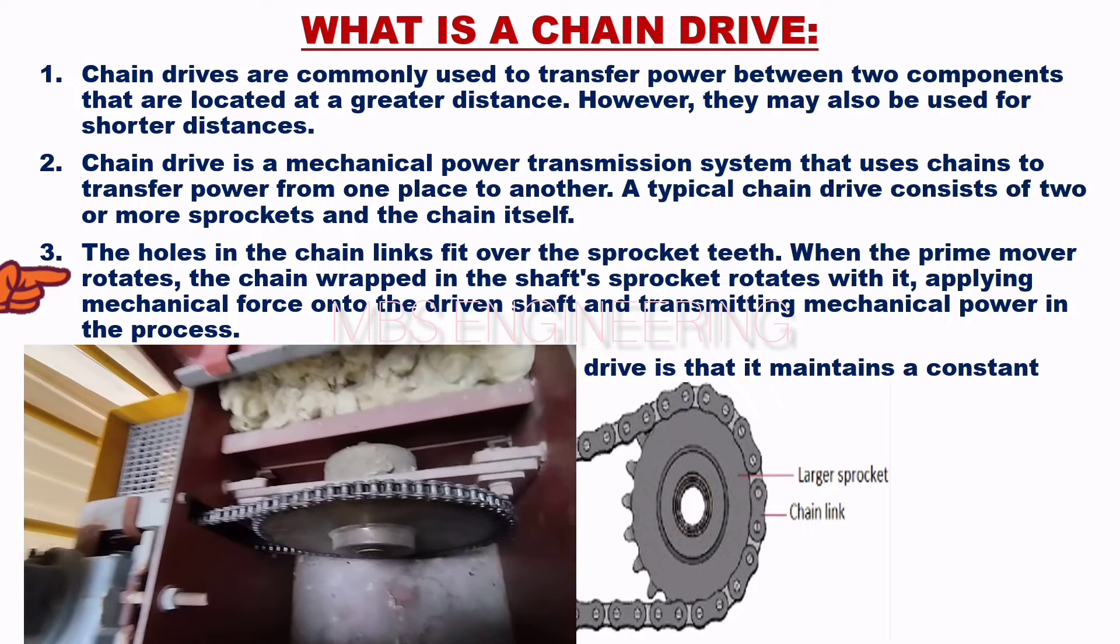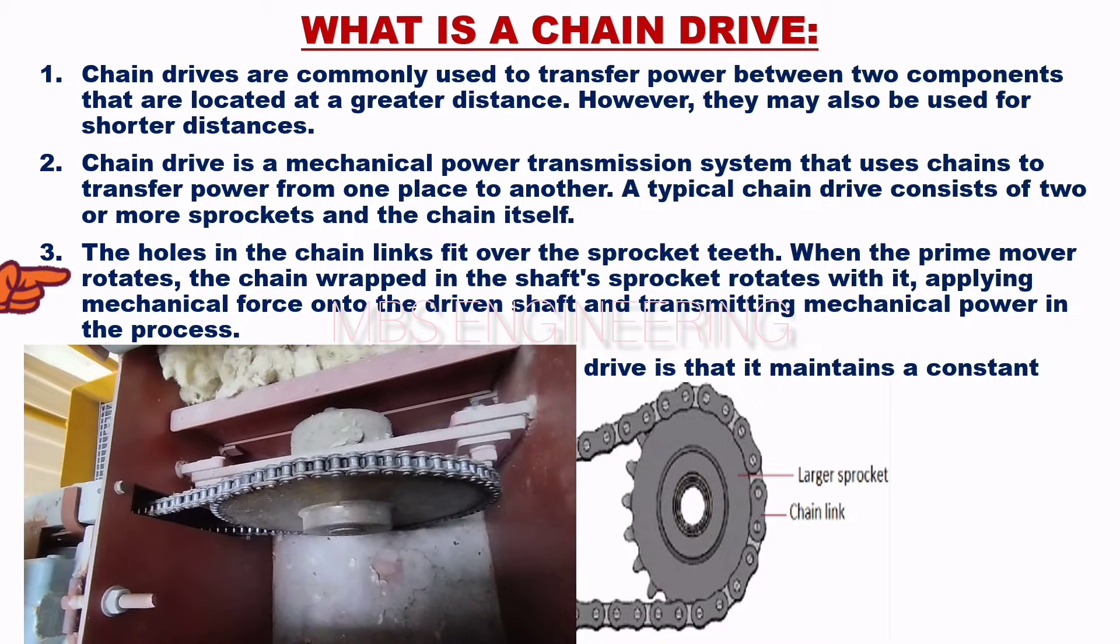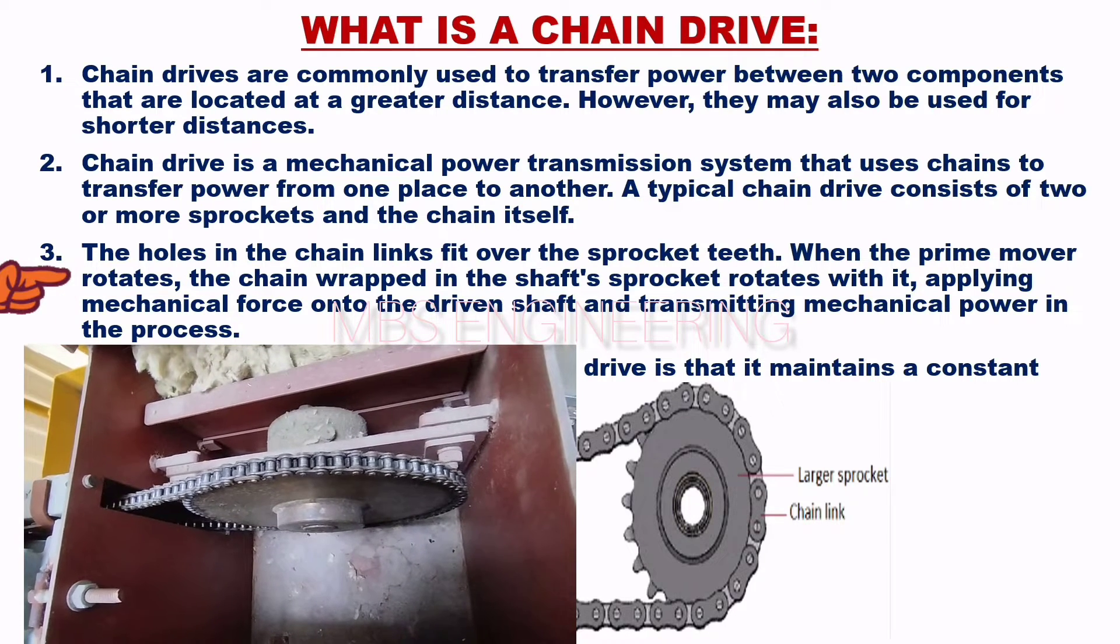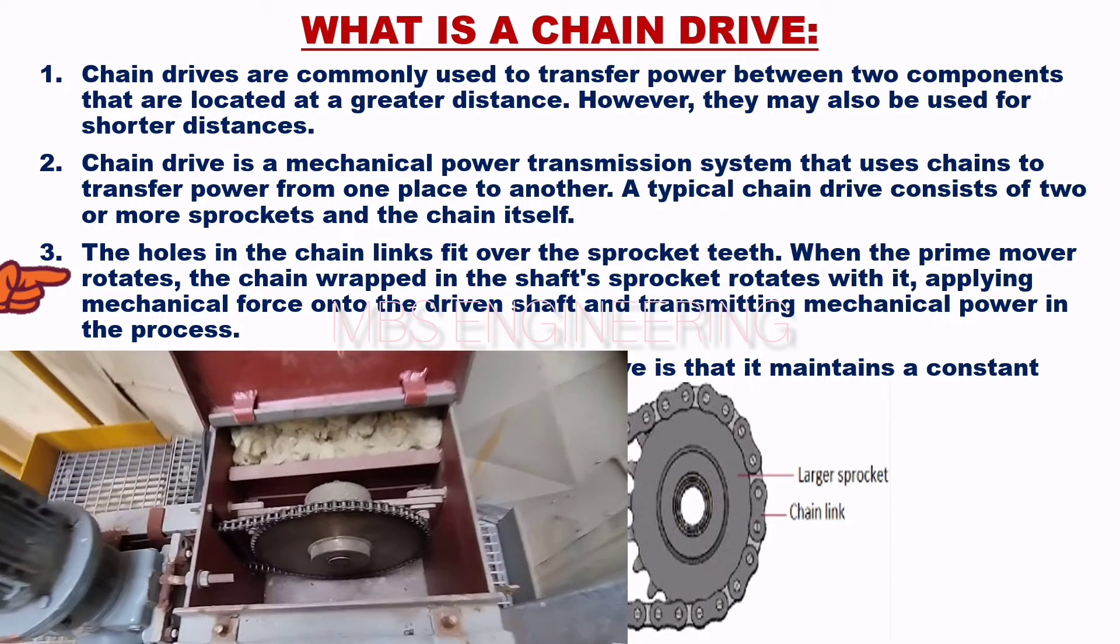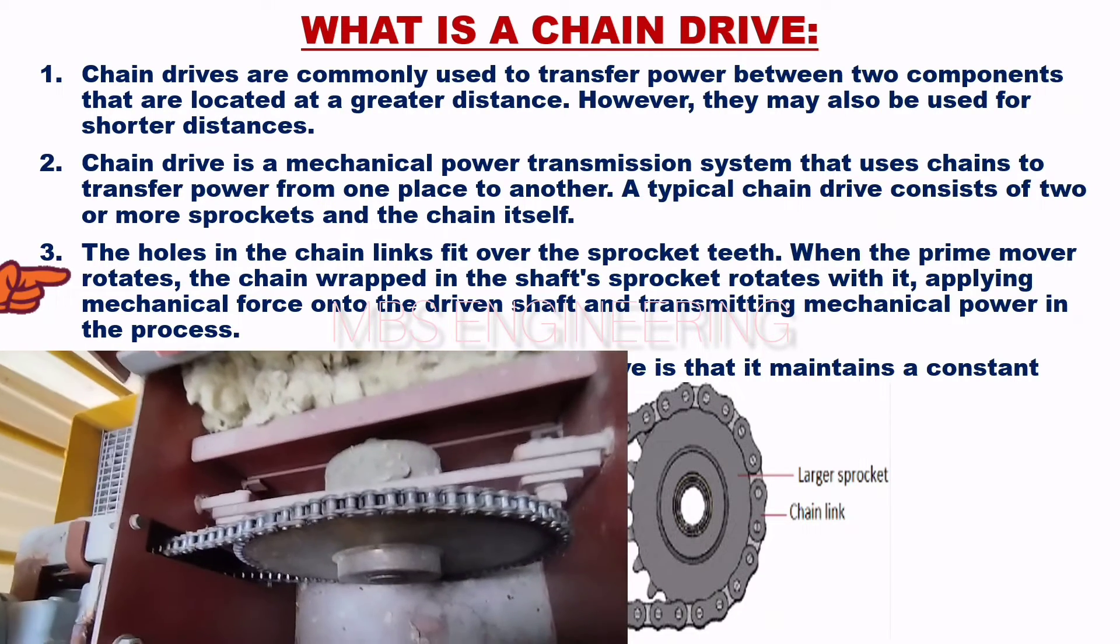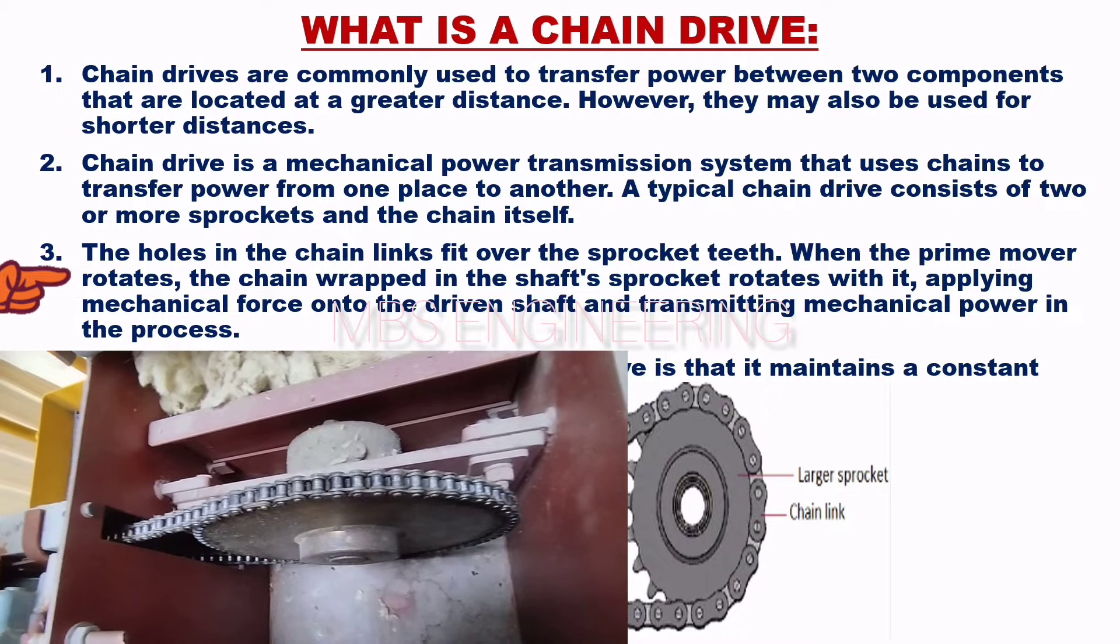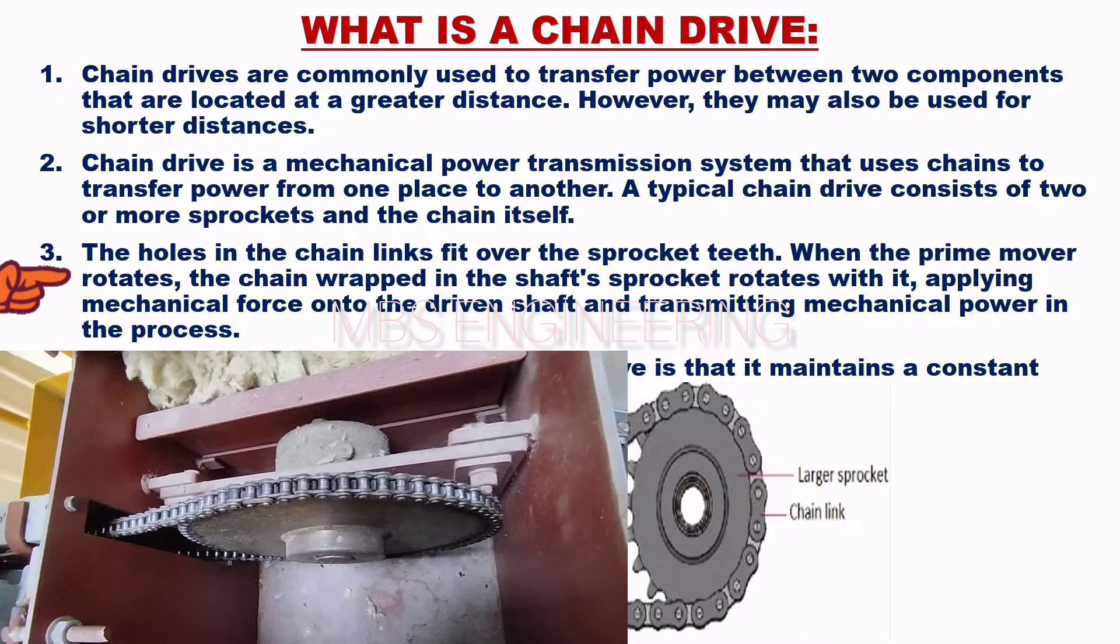The third point is that the holes in the chain links fit over the sprocket teeth. When the prime mover rotates, the chain wrapped in the shaft's sprocket rotates with it, applying mechanical force onto the driven shaft and transmitting mechanical power in the process.